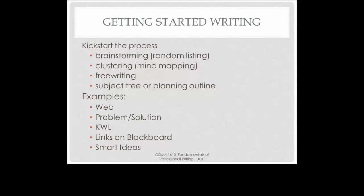As suggested earlier, you will need to kick-start your writing. Sometimes this will be easy, other times not so easy. There are different techniques for doing this, some of which you may already be familiar with. Brainstorming and free writing involve writing ideas down as they come to you. Brainstorming is often done as a random listing of ideas that are later organized in other ways. Free writing is simply starting to write in sentences as the ideas come to you — sometimes called stream of consciousness. With free writing, you don't worry about grammar, organization, or spelling; that part comes later, after you get some ideas down on paper so that you have somewhere to start. Clustering or mind mapping uses bubbles connecting from a central idea and connecting between each other. A subject tree or planning outline tends to be much more linear. You can find lots of examples of different techniques online.